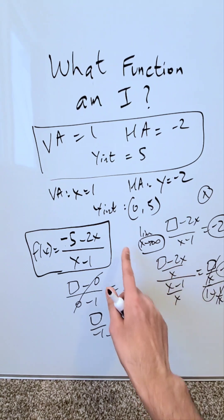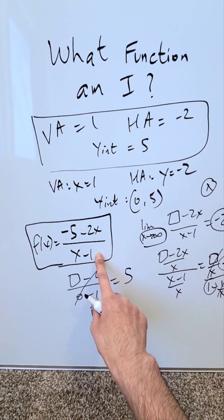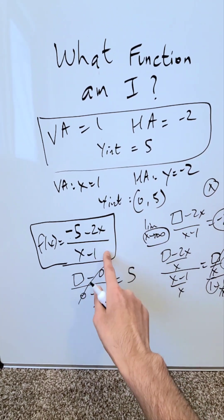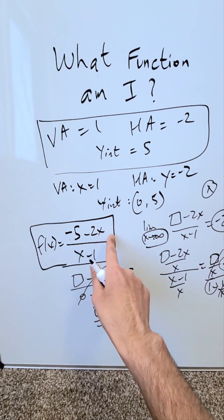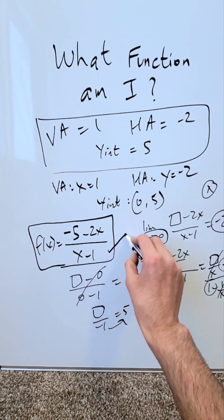Just represent this yourself on a graphing tool. You'll see vertical asymptote will be exactly what I have for you. Horizontal asymptote minus 2, y-intercept 5, and it will be correct. Minus 5 minus 2x over x minus 1. This representation is good.